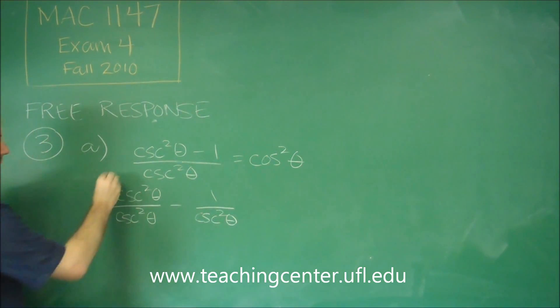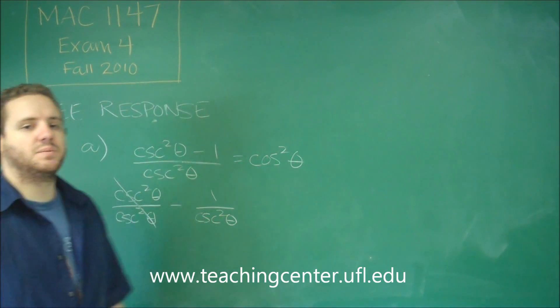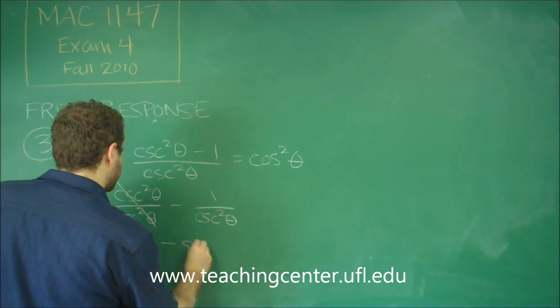So this is obviously one. We have the reciprocal of cosecant squared. Cosecant is the reciprocal of sine. So to flip that around, that's just sine squared.